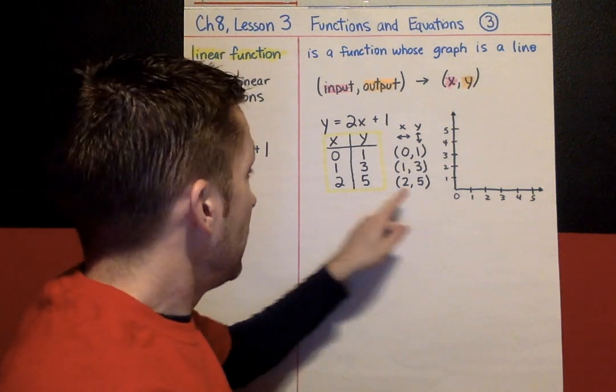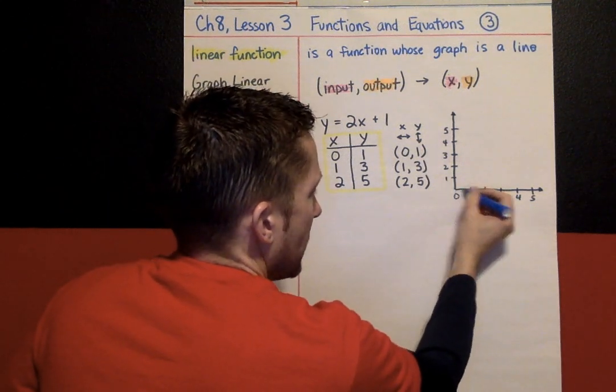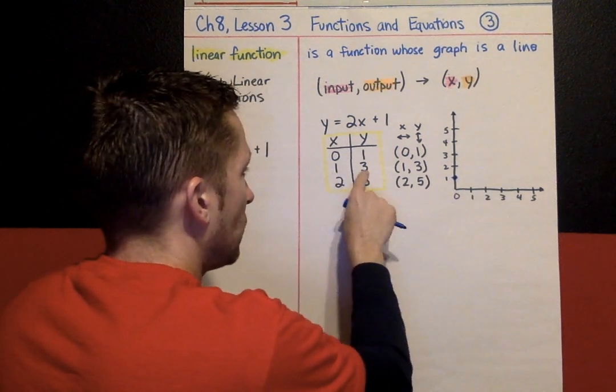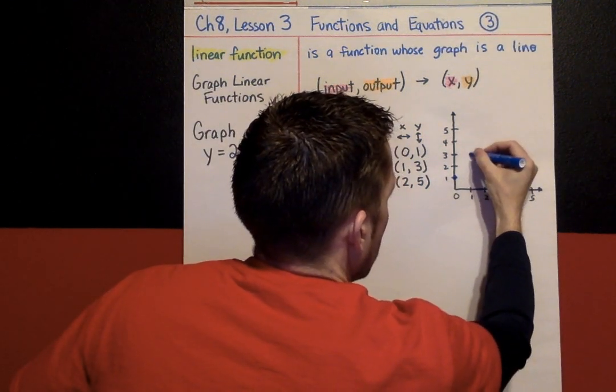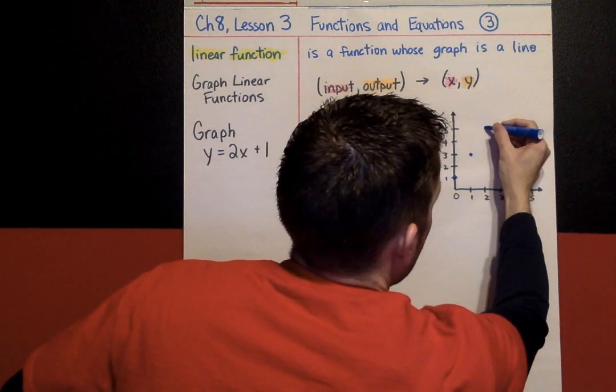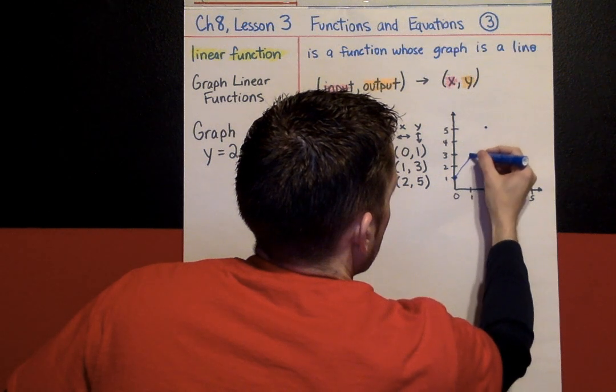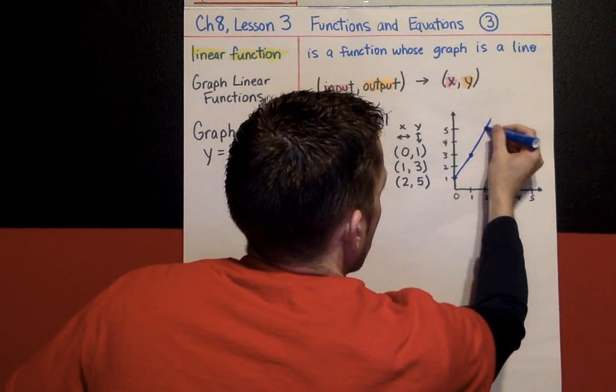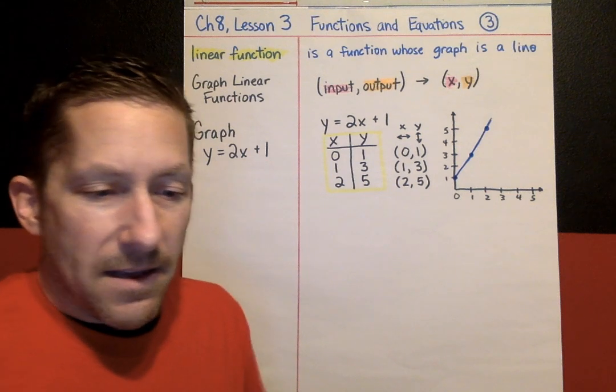So, now let's put our ordered pairs on the graph. 0, 1 is right here. I'm not going to move right or left at all. And, I go right to here. The next ordered pair is 1, 3, over to 1, up to 3. Finally, 2, 5, over 2, up to 5, right there. And, then makes, should have used a ruler, but the ordered pairs make a straight line.